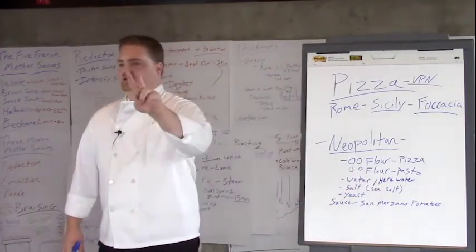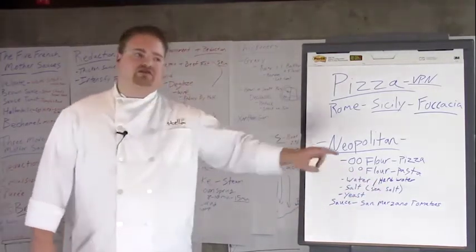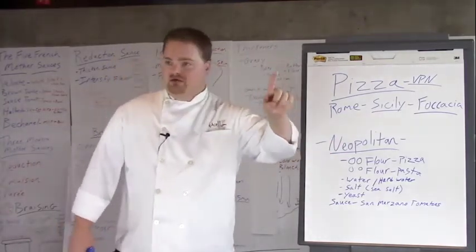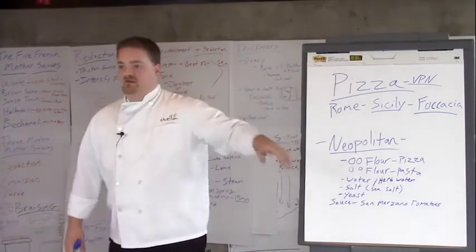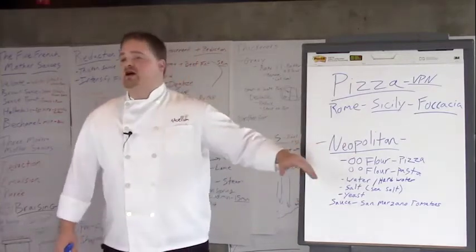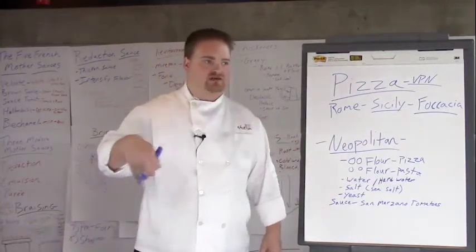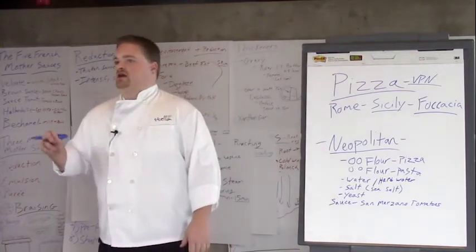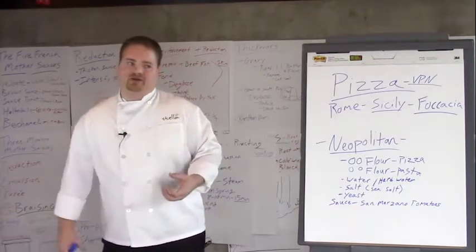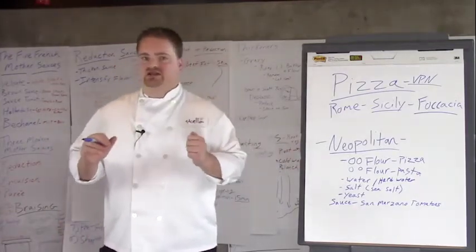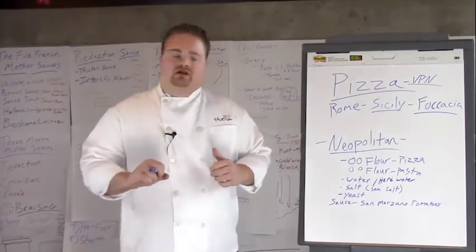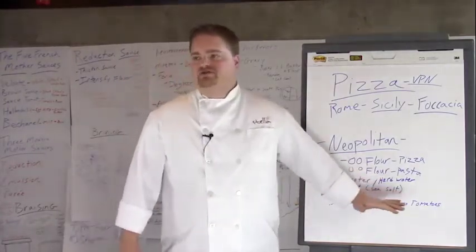There are only two pizzas officially recognized by VPN: the margherita — fresh buffalo mozzarella, tomato sauce, and fresh basil — and the marinara, which has no cheese, just straight tomato sauce and optionally a sprinkling of dry oregano. It's a very purist form of pizza. Because you stretch the crust thin and work with it in the wood fire oven, you want to be a minimalist with the toppings.